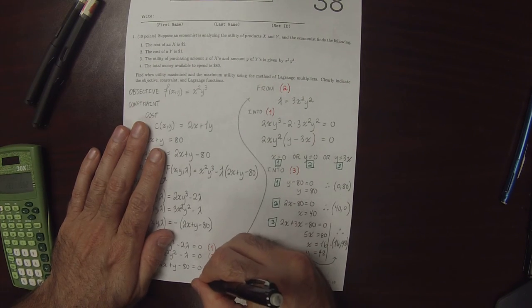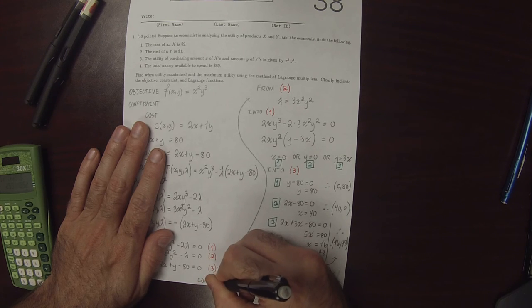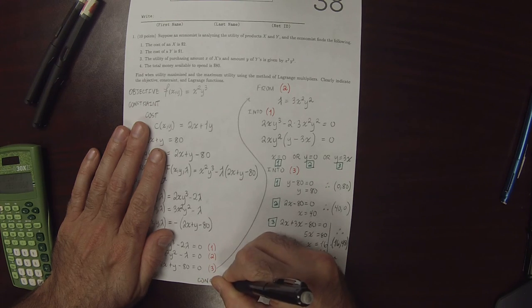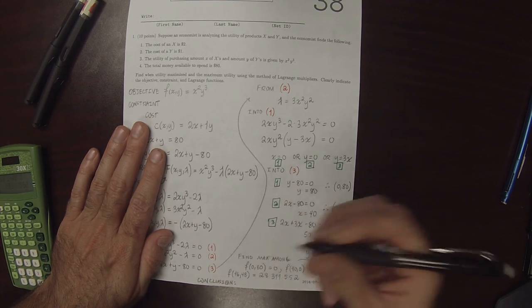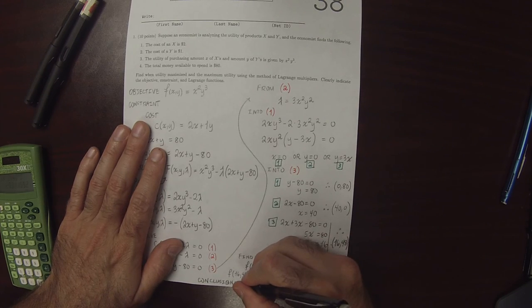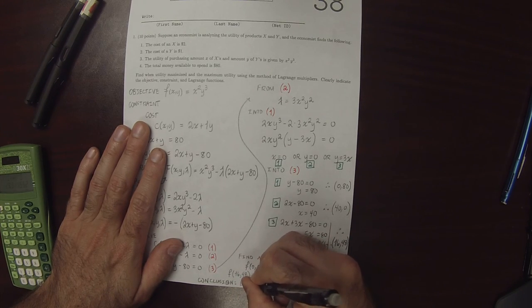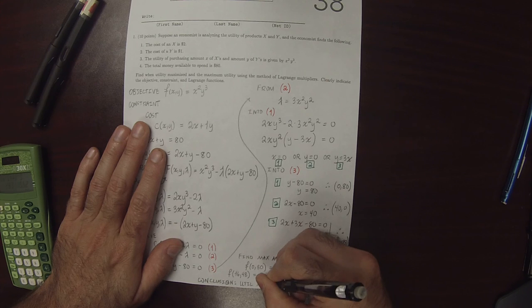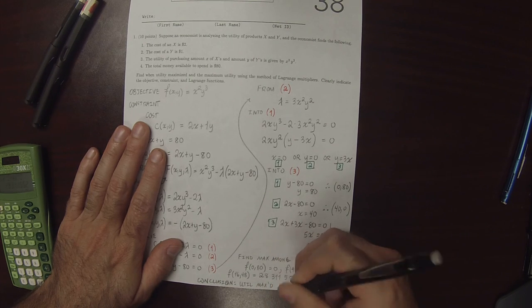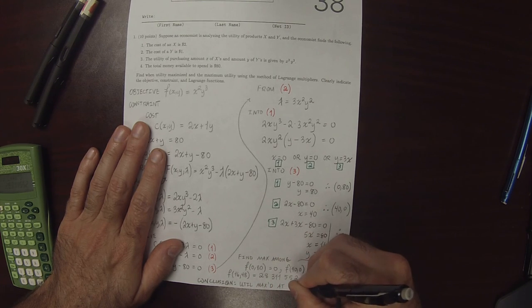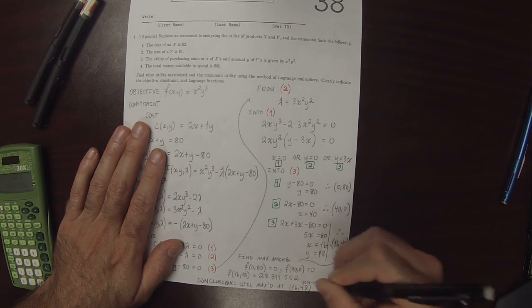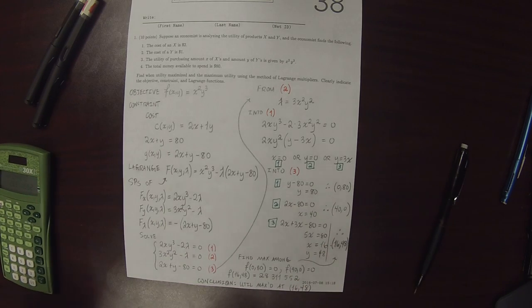The conclusion is that utility is maximized at 16, 48. And that's the solution to the exercise.